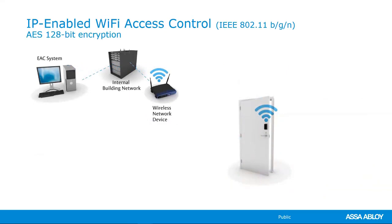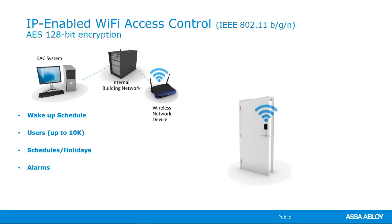Now that we have the lock body itself, let's talk about what an actual system would look like running. With Wi-Fi locks, there are limitations — one being you cannot force communication. The lock initiates all communication. So in setting up a lock, just like any access control door, you're going to add your users. These locks can hold up to 10,000 users depending on the software application. They'll be able to hold schedules and holidays you're typically used to, and they also have a plethora of alarms. Being that it's a Wi-Fi lock, you set schedules — typically once or twice a day — and the lock will force itself to wake up.